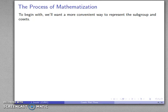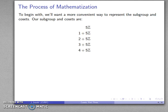And so let's begin by trying to develop some notation. We want a somewhat more convenient way to represent the subgroup and its cosets. So remember our subgroup and the cosets, they were the subgroup 5Z and the things that we got by adding an element that wasn't in 5Z to them.